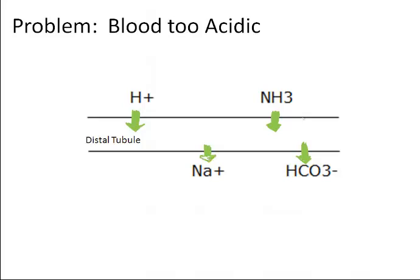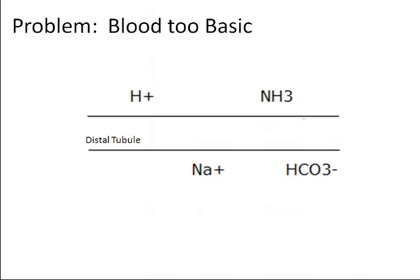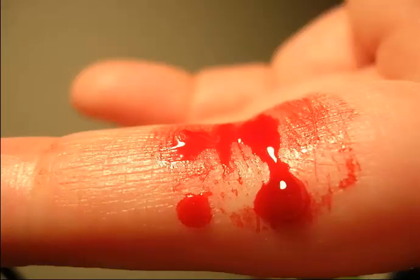If the problem is that the blood is too basic, fewer hydrogen ions and fewer ammonia ions are secreted into the distal tubules directly from the blood. And this is shown with thinner arrows. Fewer sodium ions and fewer bicarbonate ions are reabsorbed back into the blood because the blood is already alkaline and we don't need the buffer bicarbonate to counter any low pH—the pH is not low. As a result of tubular secretion, blood pH is regulated and maintained within normal limits of 7.3 to 7.4.